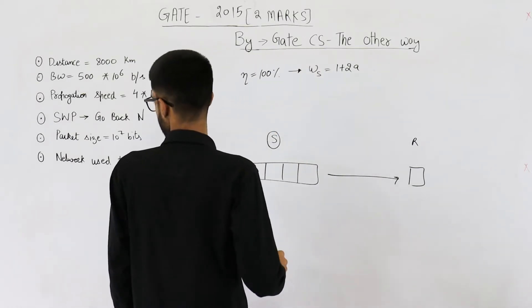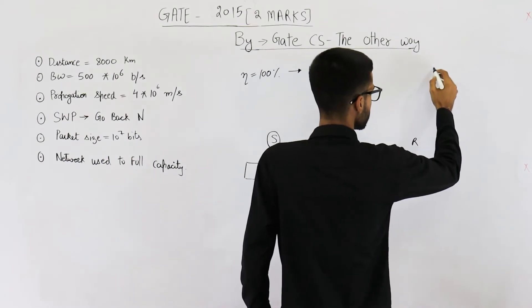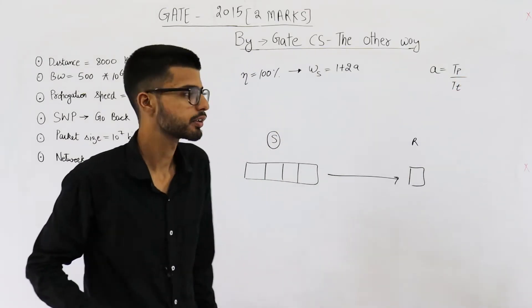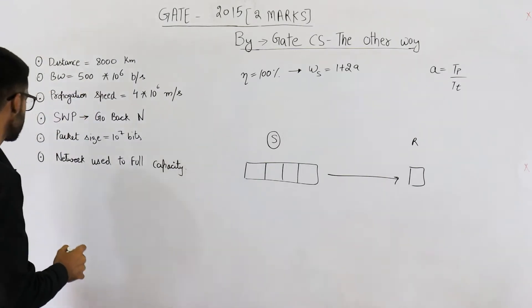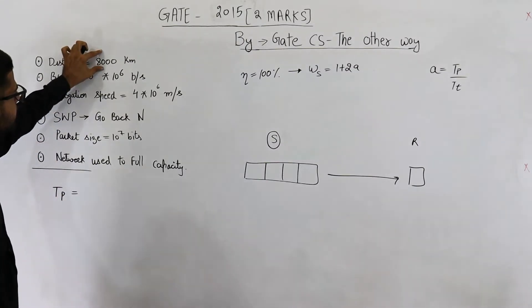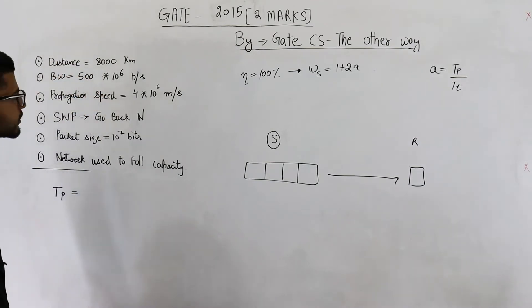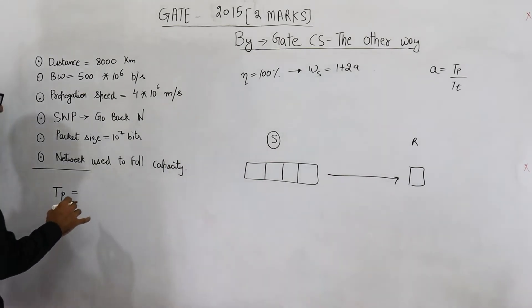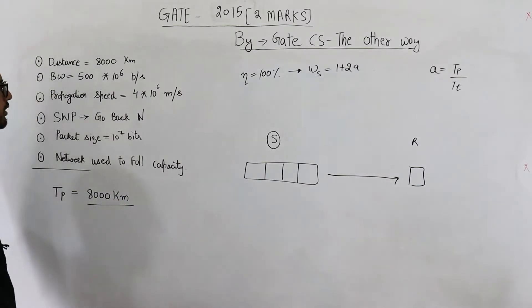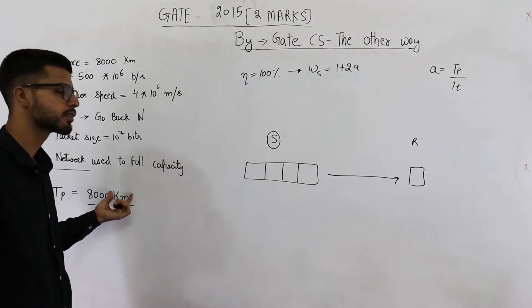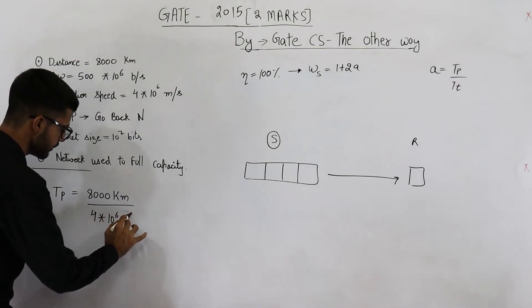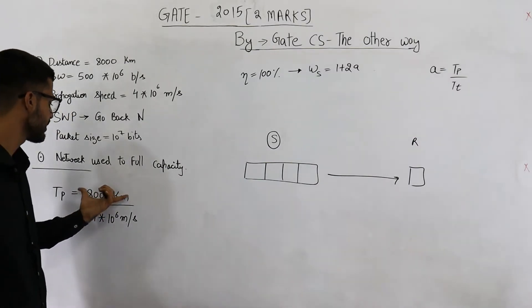a is Tp divided by Tt, propagation time divided by transmission time. Both of these values are not given in the question. We need to determine Tp as well as Tt. Let us see what is the value of Tp. Propagation delay is defined as distance divided by the speed, the distance between the two nodes and speed at which data can travel. The distance is given in the question, it is 8000 kilometers.